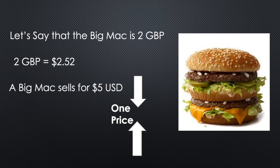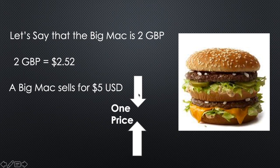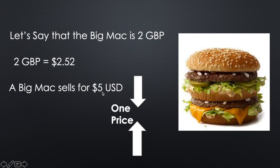So what exactly is the principle of arbitrage here? Arbitrage is: we're going to buy low, and then we're going to sell high — we're going to buy here, and sell there. We're going to buy the Big Mac in Great Britain for $2.52, and then try to sell it to people in the United States, because people in the United States are buying it for $5. So we buy it in Great Britain for 2 Great British pounds, which equals $2.52, and then sell it in the United States to make a profit.